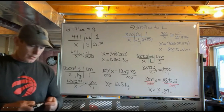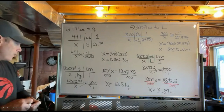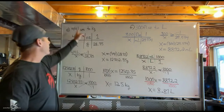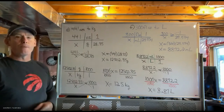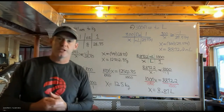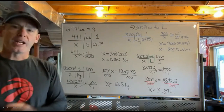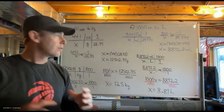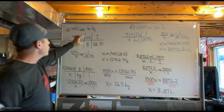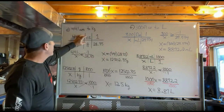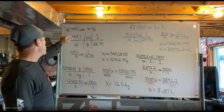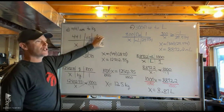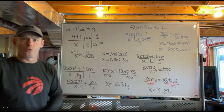Sometimes you have to go two steps because there's no direct relationship between the units, but most of the time there is. In the end, we're always doing the same thing: set up your tables, get your units right, know what you have and what you're trying to find, then find the relationship between the two.